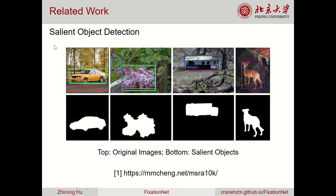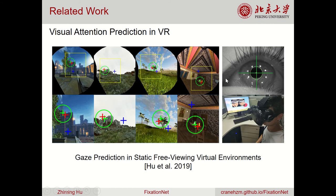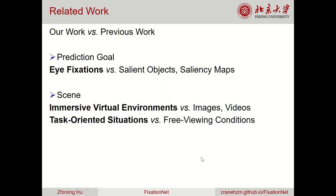Our research is related to saliency object detection in computer vision, which predicts saliency objects from images. Another important work is saliency prediction, which predicts saliency maps from images. Recently, researchers have focused on gaze prediction in static free-viewing virtual environments, as well as gaze prediction in dynamic free-viewing virtual environments. Compared with previous work, we predict eye fixations rather than saliency objects or saliency maps, focusing on immersive virtual environments and task-oriented situations instead of images, videos, or free viewing conditions.